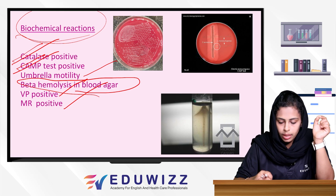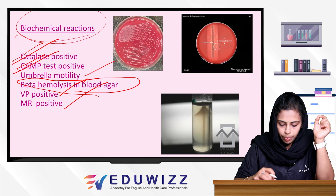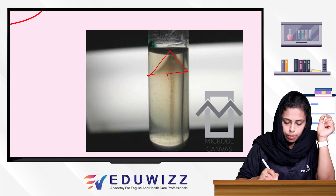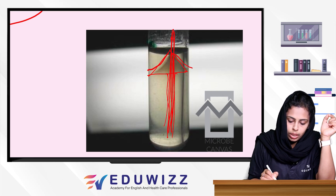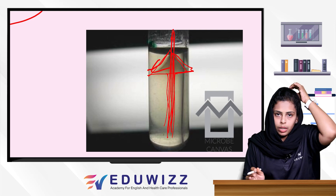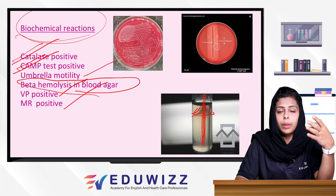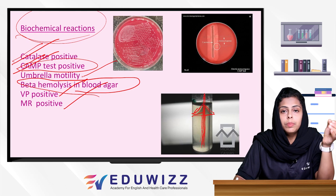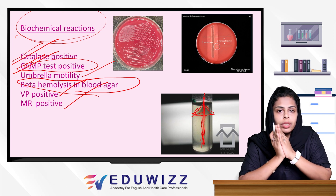This shows the CAMP test with Staphylococcus aureus, which is positive for Listeria. This also shows the umbrella motility pattern in semi-solid media — it is not a true umbrella shape, but the growth pattern in semi-solid media is called umbrella motility. So to summarize: CAMP test positive, umbrella motility, and beta hemolysis in blood agar are key identifying features.